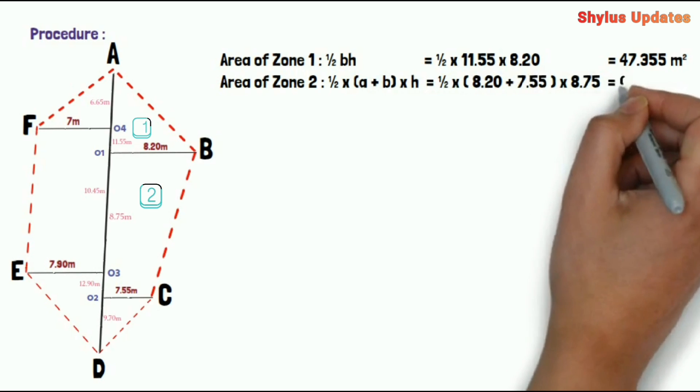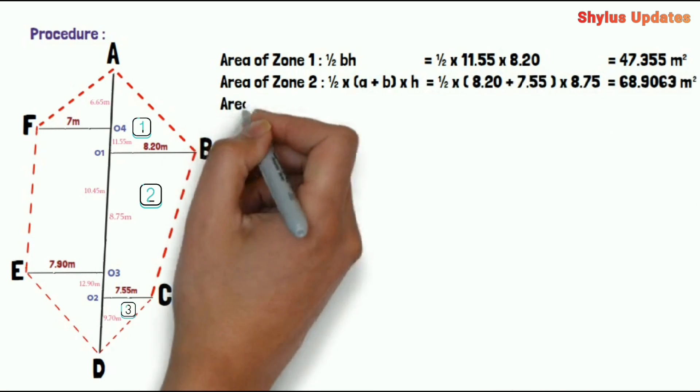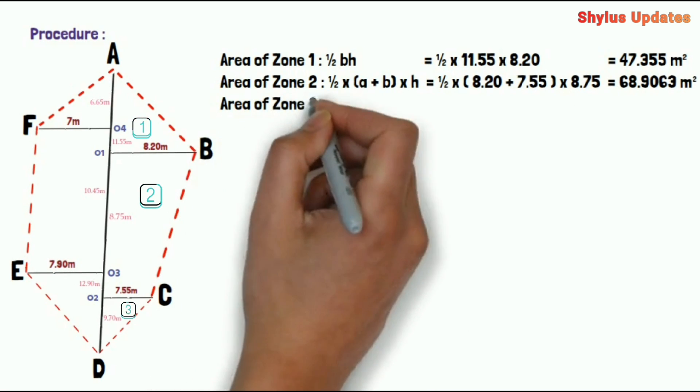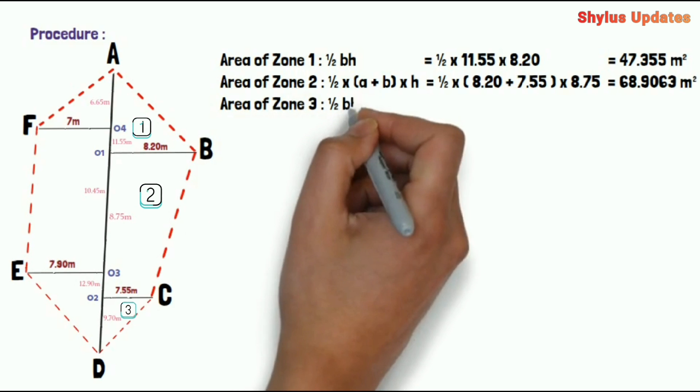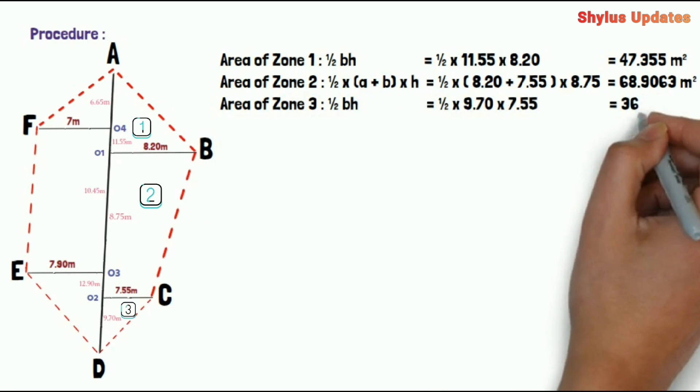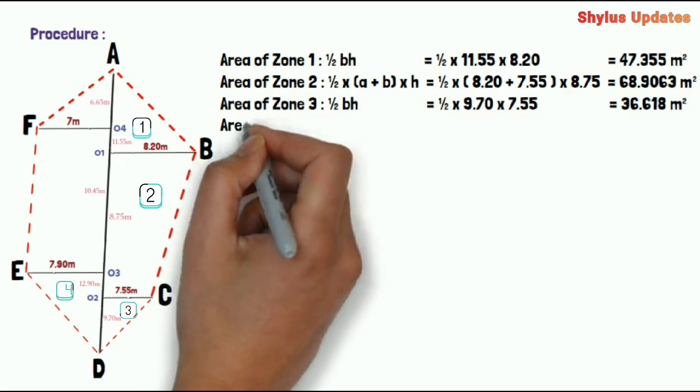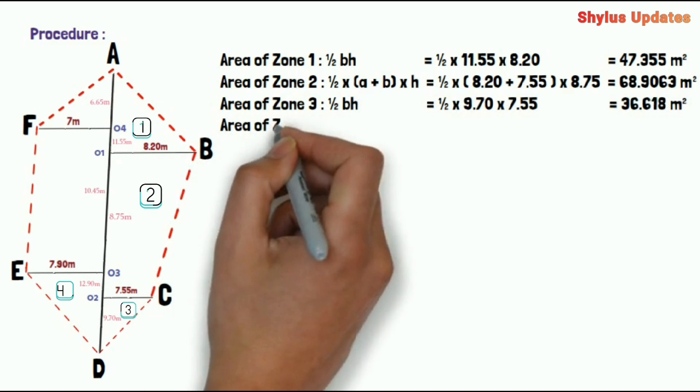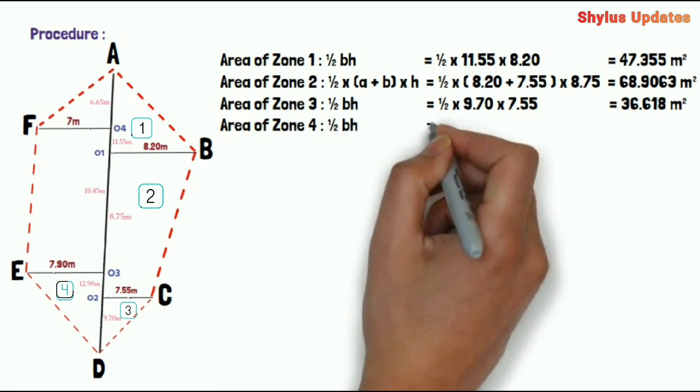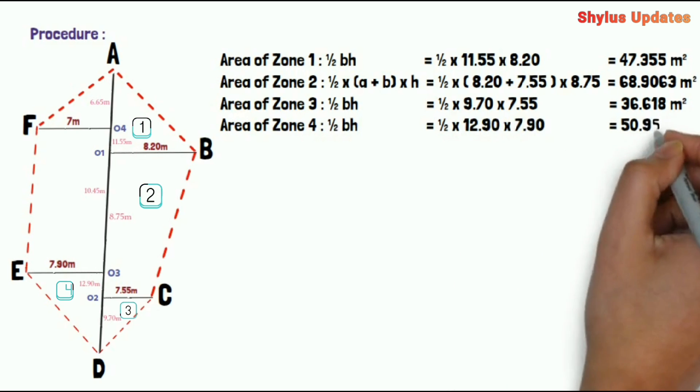Area of Zone 3: Zone 3 looks like a triangle, so use the area of triangle formula 1/2 B × H. When you substitute the values, you get the value as 36.618 meter square. Area of Zone 4: Zone 4 also looks like triangle, so use area of triangle formula 1/2 B × H. When you substitute the values, you get the answer as 50.955 meter square.